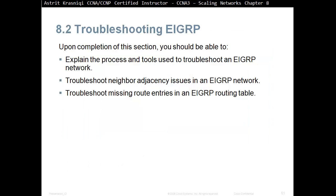Upon completion of this section, you should be able to explain the process and tools used to troubleshoot an EIGRP network, troubleshoot network adjacency issues in an EIGRP network, and troubleshoot missing routing entries in the EIGRP routing table.